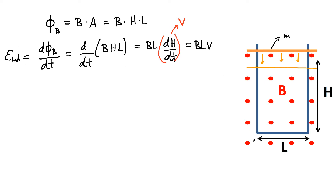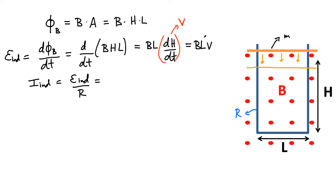The entire loop has some total resistance R. For the first question — the magnitude of the induced current — it's straightforward: simply the induced EMF divided by the total resistance. Substituting the expression for the induced EMF, we get the induced current I equals B·L·V divided by R. That's the magnitude of the current.